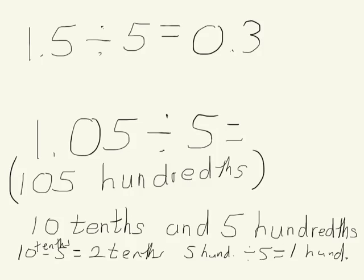So my answer, 2 tenths and 1 hundredth, looks like 21 hundredths. 2 tenths, 1 hundredth. 1 and 5 hundredths divided by 5 is 21 hundredths.